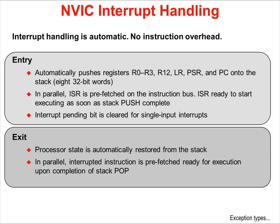Cortex-M4 interrupt handling is totally automatic with no instruction overhead. On entry, the device automatically pushes registers R0 through R3, R12, the LR, the PSR, and the program counter onto the stack. In parallel, the address of the applicable interrupt service routine is fetched onto the instruction bus. The ISR is then ready to start execution as soon as the last stack push is complete. On exit, the processor state is automatically restored from the stack, and the address of the interrupted instruction is pre-fetched, ready for execution upon completion of the final stack pop.